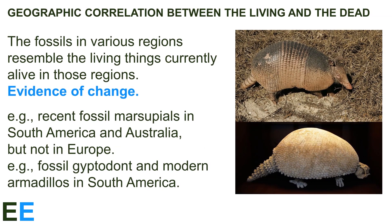Finally, the fossils in various regions resemble the living things currently alive in those regions. There is a connection between today's living things and what used to live in the same location — evidence of change from previous organisms into modern ones. For example, we only find recent fossil marsupials in South America and Australia, the two parts of the world where marsupials currently live, and not in Europe, which has no living marsupials. Similarly, armadillos are found in South America and Southern North America, the same place where we find fossils of glyptodonts, which share obvious features with armadillos very different from those of other mammals elsewhere.